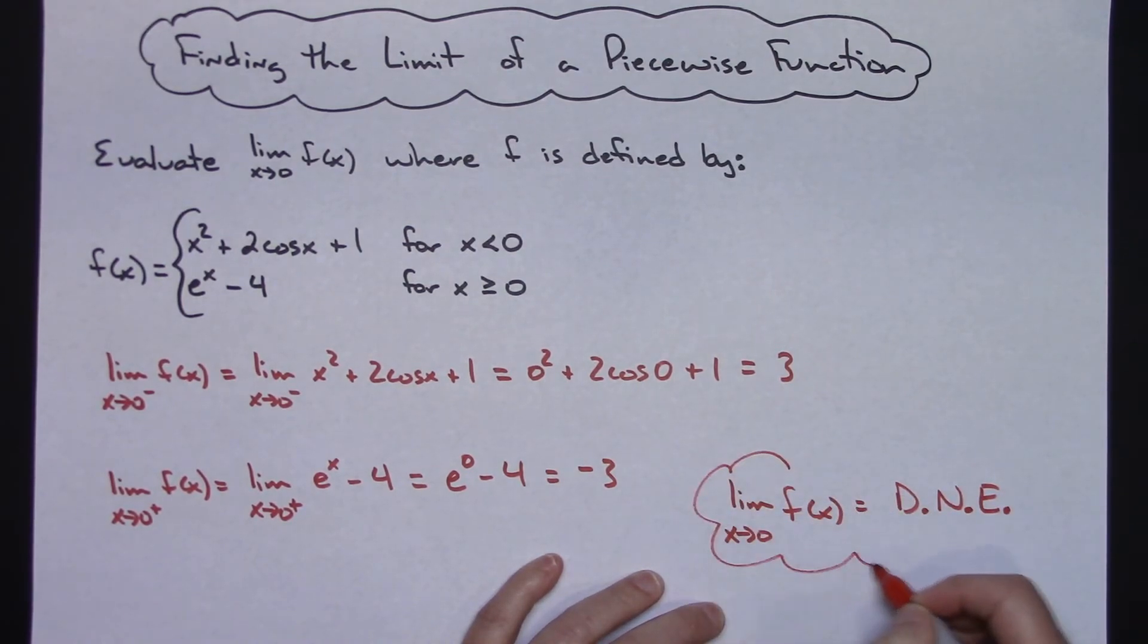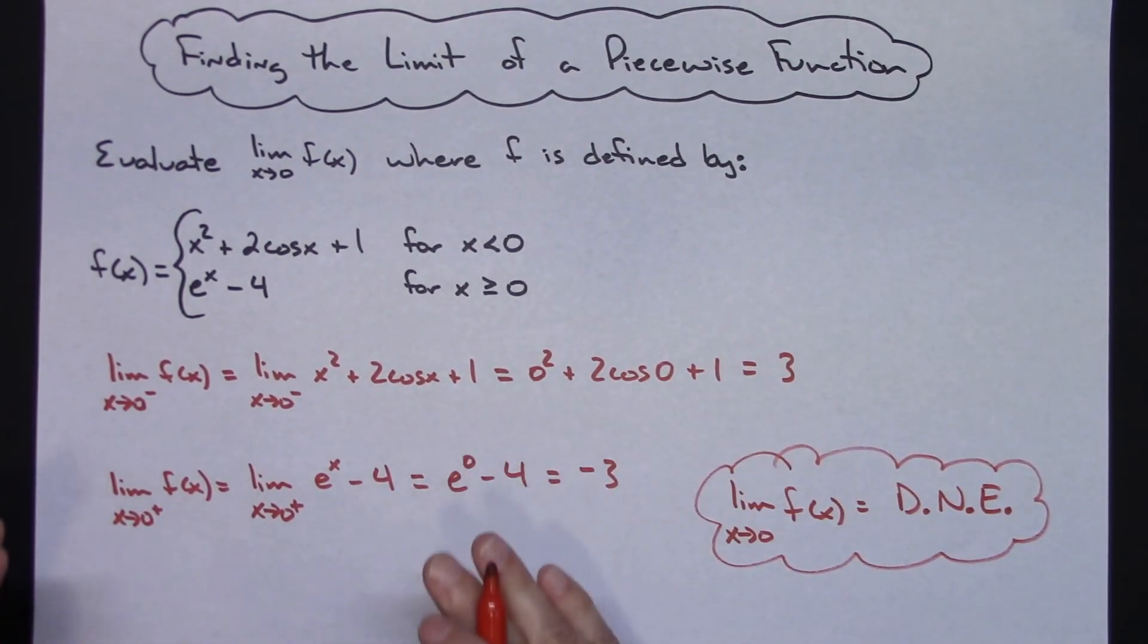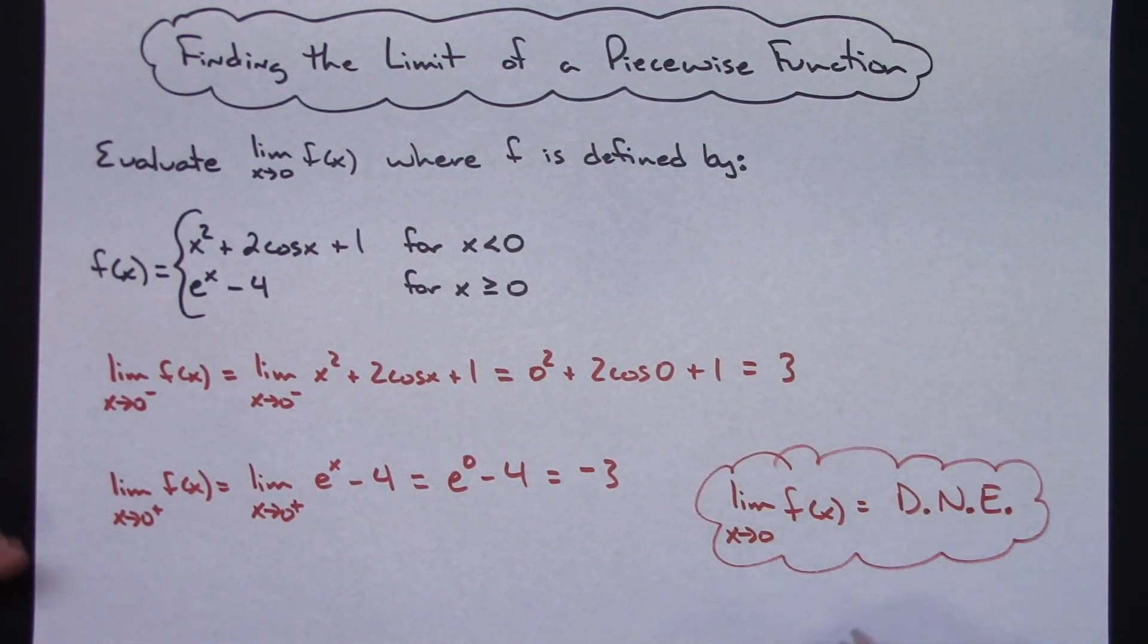So the thing to keep in mind when you're trying to find the limit of a piecewise function is that you're going to have to consider those one-sided limits just because of the way the function is originally defined. Definitely thanks for watching. Be sure and give me a thumbs up and share with your friends. Thanks!